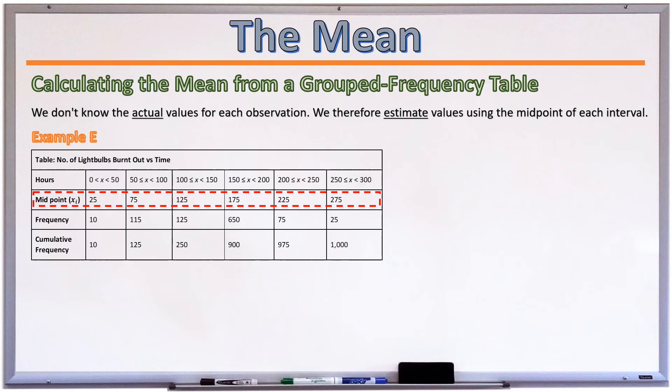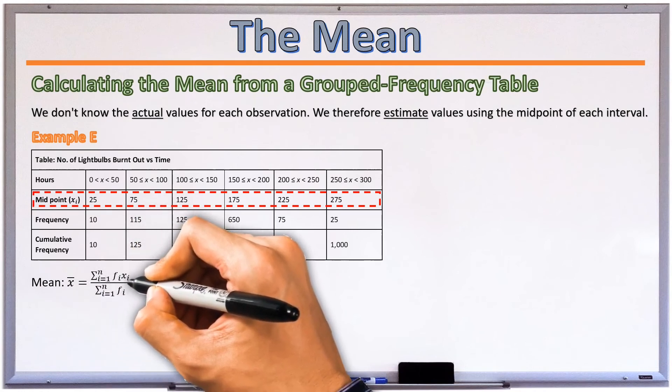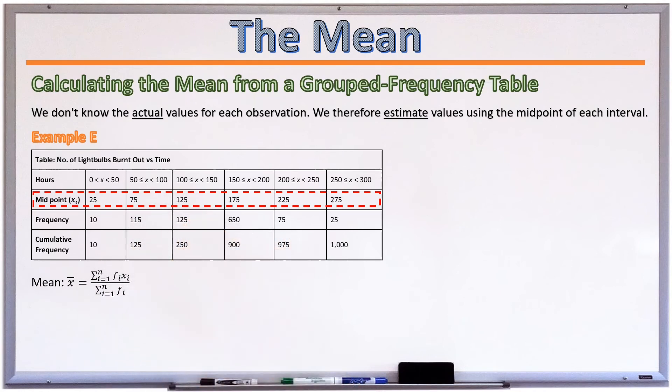So we can then calculate the mean by using our formula, x-bar is equal to the sum of all the frequencies, multiplied by the observations, divided by the sum of all the frequencies. So this would give us 10 times 25 for the first column. Why? Because we have 10 observations that correspond to a value of 25 on average. Remember, we don't know what each of the observations were, but on average, we can estimate that each of the observations took on a value of about 25. So similarly, for the next column, where the midpoint was 75, we had 115 observations of 75. For the next column, we had 125 observations of 125. And so forth until the final column, where we had 25 observations of 275 on average. We would then divide that by the total number of observations, being 1,000. And we would get our mean to be 162 hours.